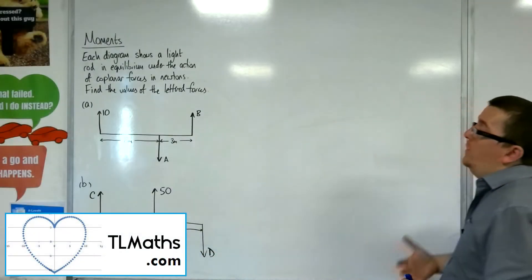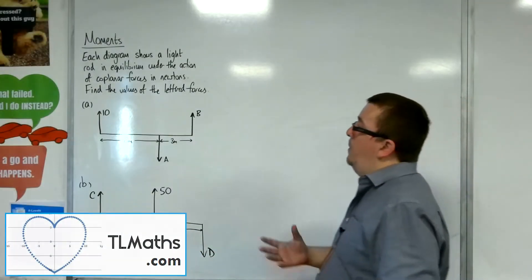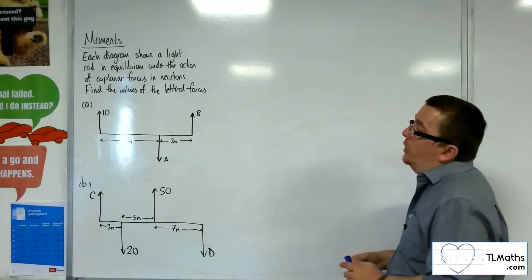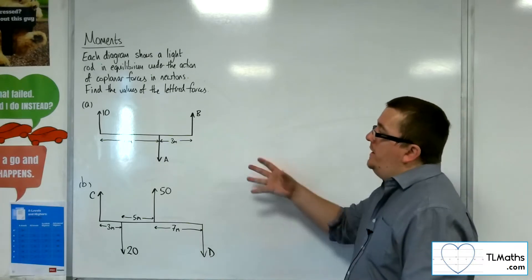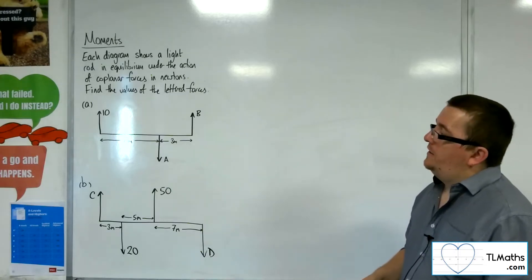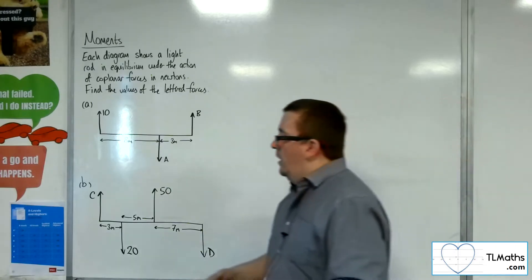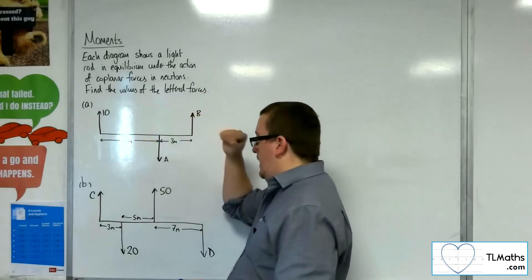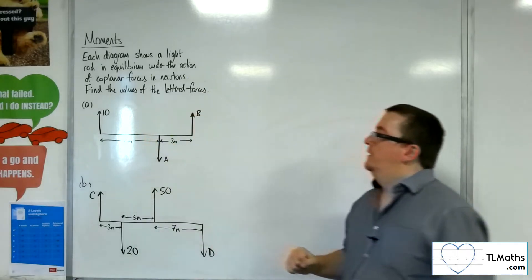In this video we've got two diagrams. They both show a light rod in equilibrium under the action of coplanar forces in newtons. We need to find the values of the lettered forces — A, B, C and D.